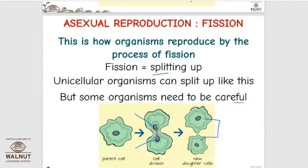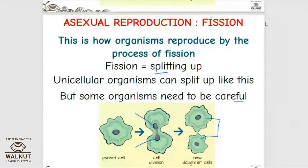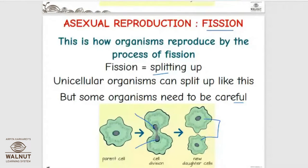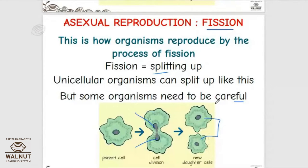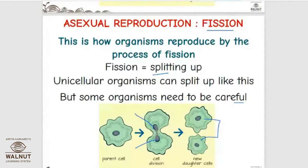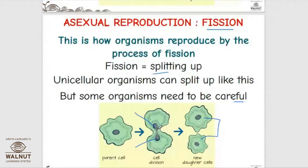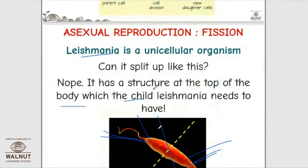We have already seen fission — fission means breaking into two parts or maybe many. We have seen the example of amoeba, in which the nucleus divides and then the cell divides into two. That is reproduction.